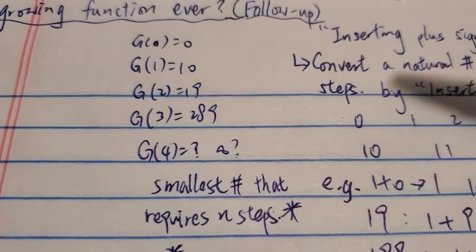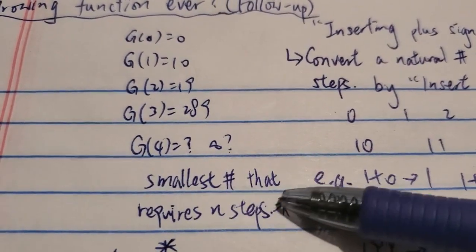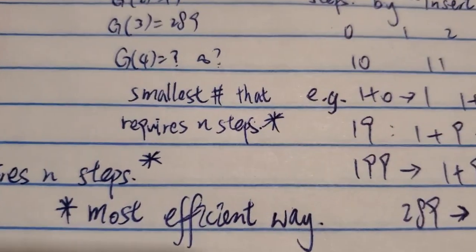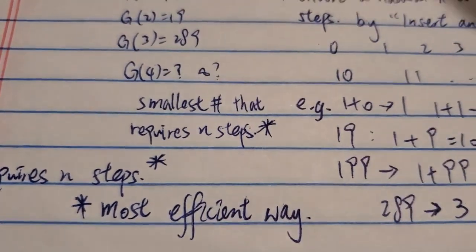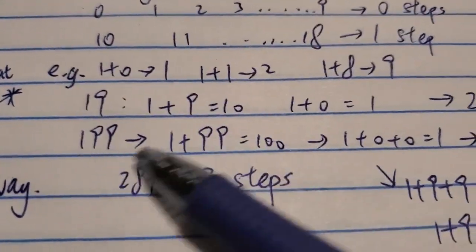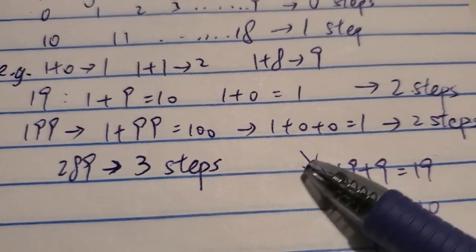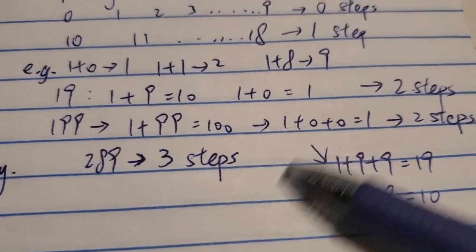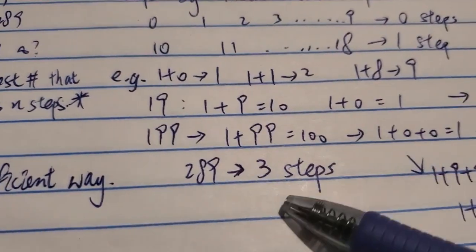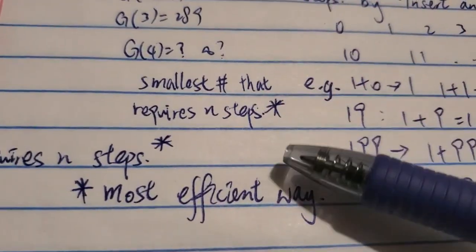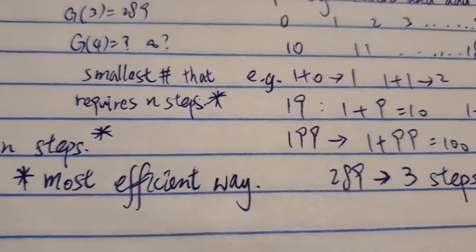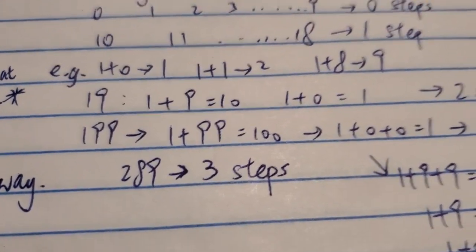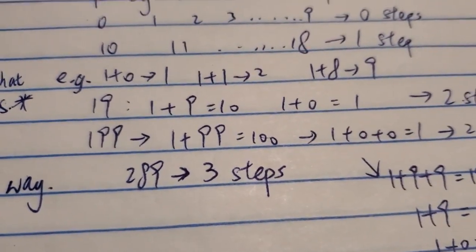Basically, the function represents the smallest number that requires n steps. A lot of people leave comments pointing out there are multiple ways — let's say for 199, there are multiple ways to convert it to a single-digit number. You can do it in two steps or three steps. I clarify that you have to use the most efficient way. So 199 is two steps, not three steps. You can do it in three steps, but we're talking about the most efficient way.